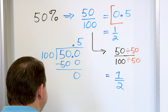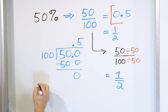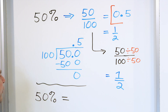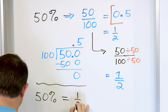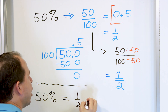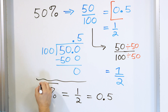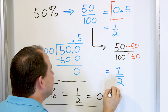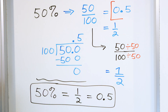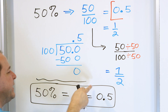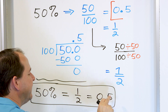Putting it all together: 50 percent can also be written as the fraction 1 half, and also as the decimal 0.5. All three of these are the same. It's important to know that every single percentage can be converted to a fraction, which can also be converted to a decimal. We've learned about fractions and converting them to decimals — now you can also represent all of these as a percentage.